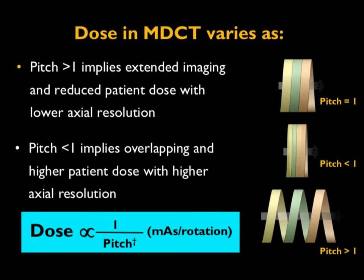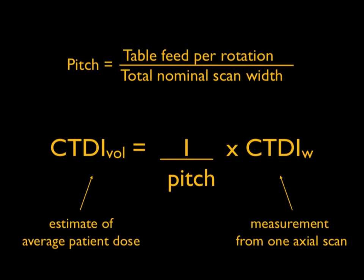An important relationship with respect to pitch is that radiation dose to the patient is inversely proportional to pitch. If the pitch is greater than 1, it implies extended imaging — imagine a slinky being pulled out with gaps in between — meaning some anatomy is not exposed to radiation, and mathematical reconstruction is done for the data between the gaps. For pitch less than 1, there is overlapping, resulting in higher patient dose and higher spatial resolution, typically used in cardiac CT. For most body protocols, pitch is greater than 1. This is incorporated into the CTDI_vol descriptor, defined as CTDI_vol = (1/pitch) × CTDI_w.